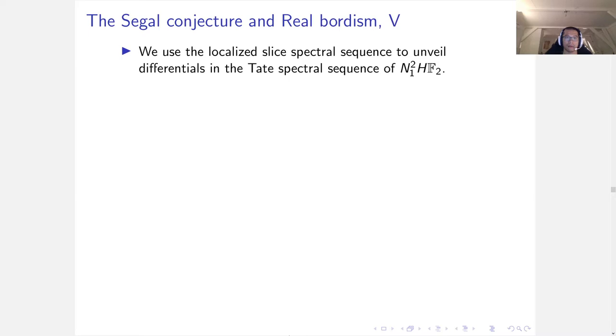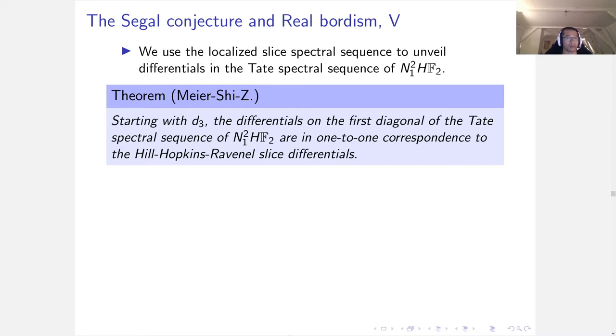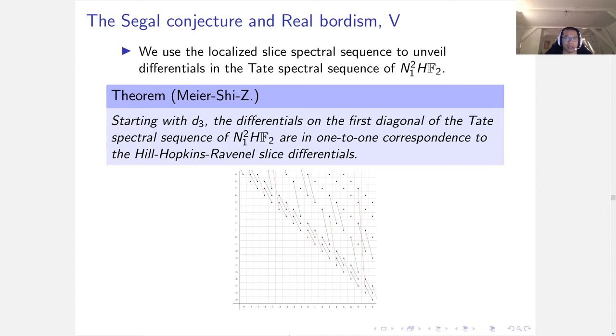Furthermore, we can use localized slice spectral sequence to unveil differentials in the Tate spectral sequence of norm of HF2. Our theorem says there is a family of Tate differentials in norm of HF2. They are in one-to-one correspondence to the Hill-Hopkins-Ravenel slice differentials. This is the picture of the known Tate differentials in the Tate spectral sequence, and the red differentials are the family which correspond to the HHR differentials.